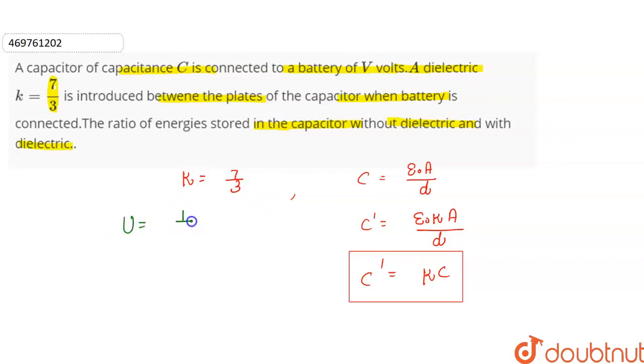U is equal to how much? The energy in the capacitor is half C V squared. V volt is connected. Here we see for our capacitor, if we see our capacitor.